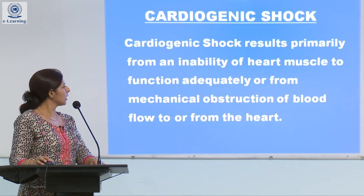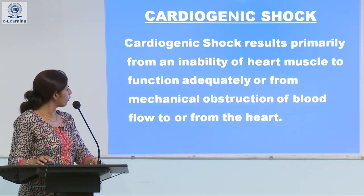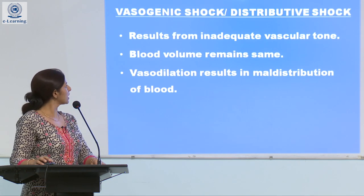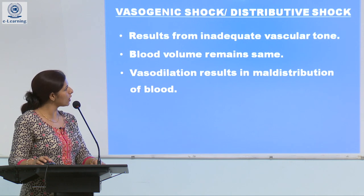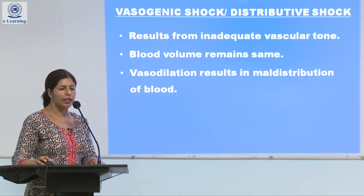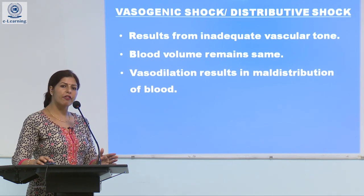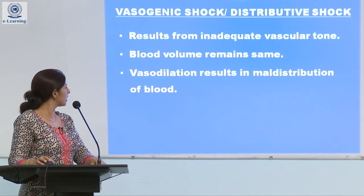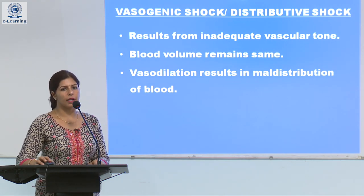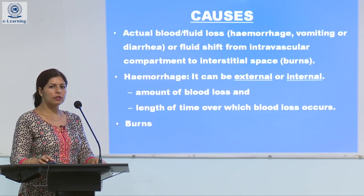Cardiogenic shock results primarily from an inability of the heart muscle to function adequately, or from a mechanical obstruction of blood flow to or from the heart. Vasogenic shock, also known as distributive shock, results from inadequate vascular tone, most commonly vasodilation. The blood volume remains the same but shifts from the intravascular compartment to the interstitial compartment. Vasodilation results in maldistribution of blood and pooling of the venous blood.